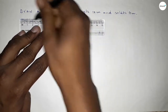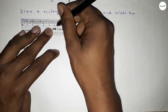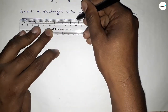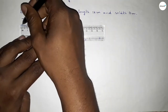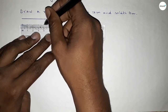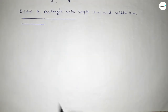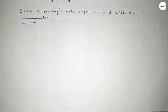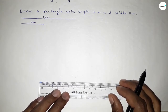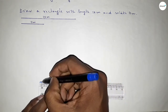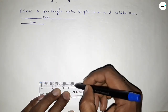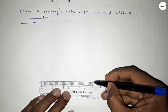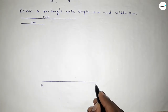First of all, we have to draw a line of length 10 centimeter. This is 10 centimeter. Drawing the line from 0 to 10 — 1, 2, 3, 4, 5, 6, 7, 8, 9, 10 — and taking here point B.